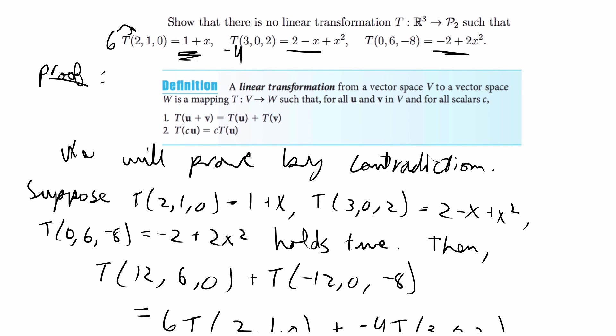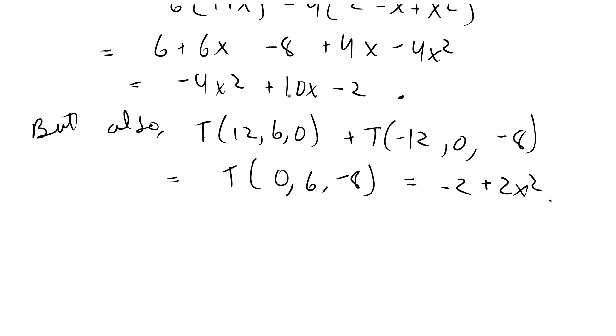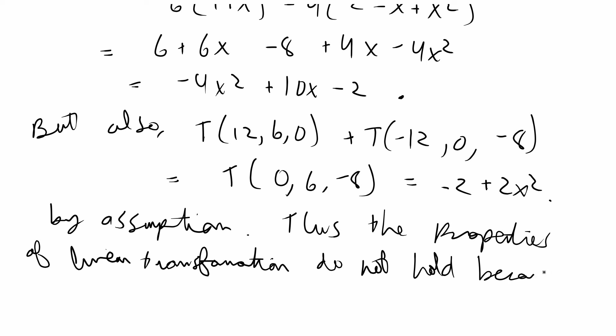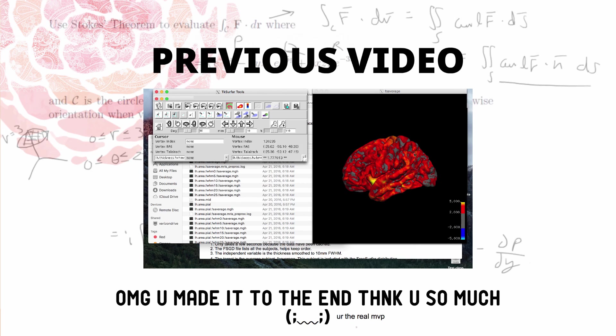And our assumption says that this transformation should be negative 2 plus 2x squared, which is a contradiction because this negative 4x squared plus 10x minus 2 does not equal negative 2 plus 2x squared. Thus, the properties of linear transformation do not hold because there is a contradiction. And we're done with this proof. Thank you.